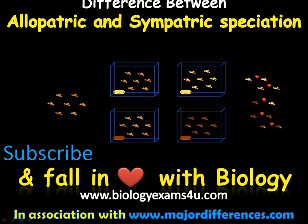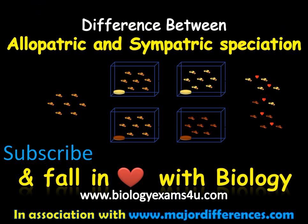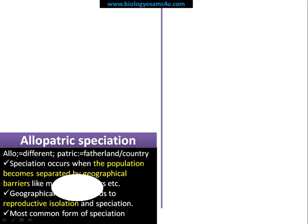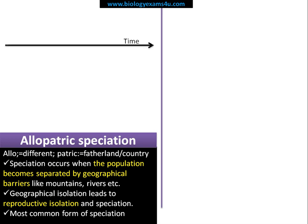This is a short video on the difference between allopatric and sympatric speciation. Allopatric — the term itself: 'allo' means different, 'patric' means country or different region. Let's take an example — suppose this is a population A.